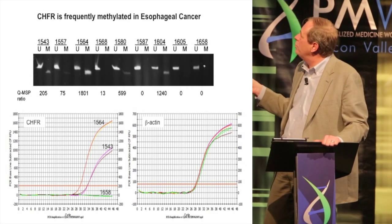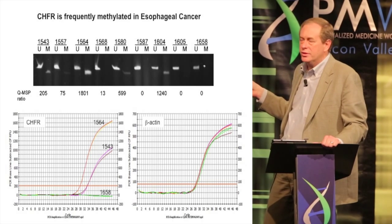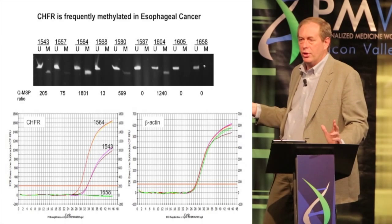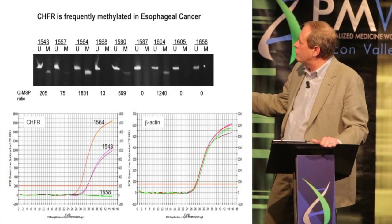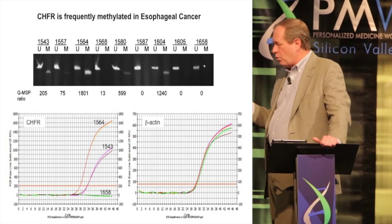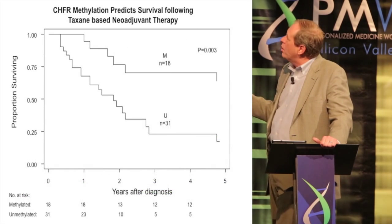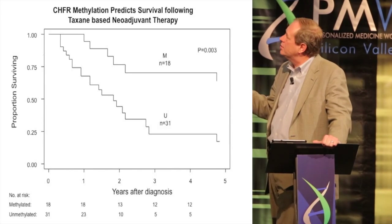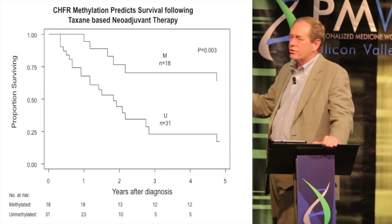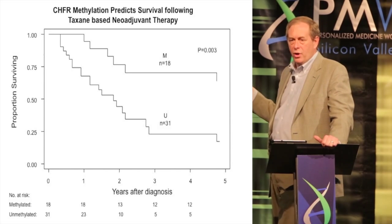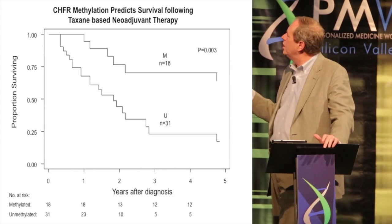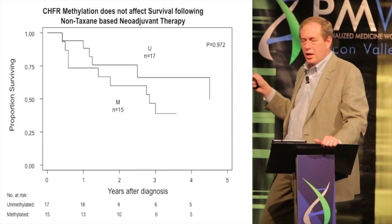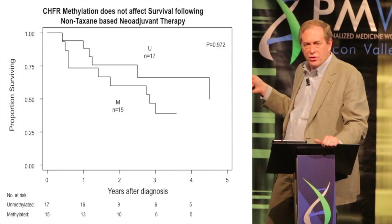In esophageal cancer, CHFR is frequently methylated — about 40 percent of primary esophageal cancers have DNA methylation and silencing of this checkpoint forkhead gene. We can use either a gel-based or real-time PCR assay to simply answer whether the tumor is methylated or not. When we look at patient outcomes for those receiving taxane therapy — either docetaxel or paclitaxel — we see improved survival in patients with the sensitive phenotype compared to those with the resistant phenotype. When patients were treated without a taxane, there's no difference in survival. This is truly a predictive test, not just a prognostic one.